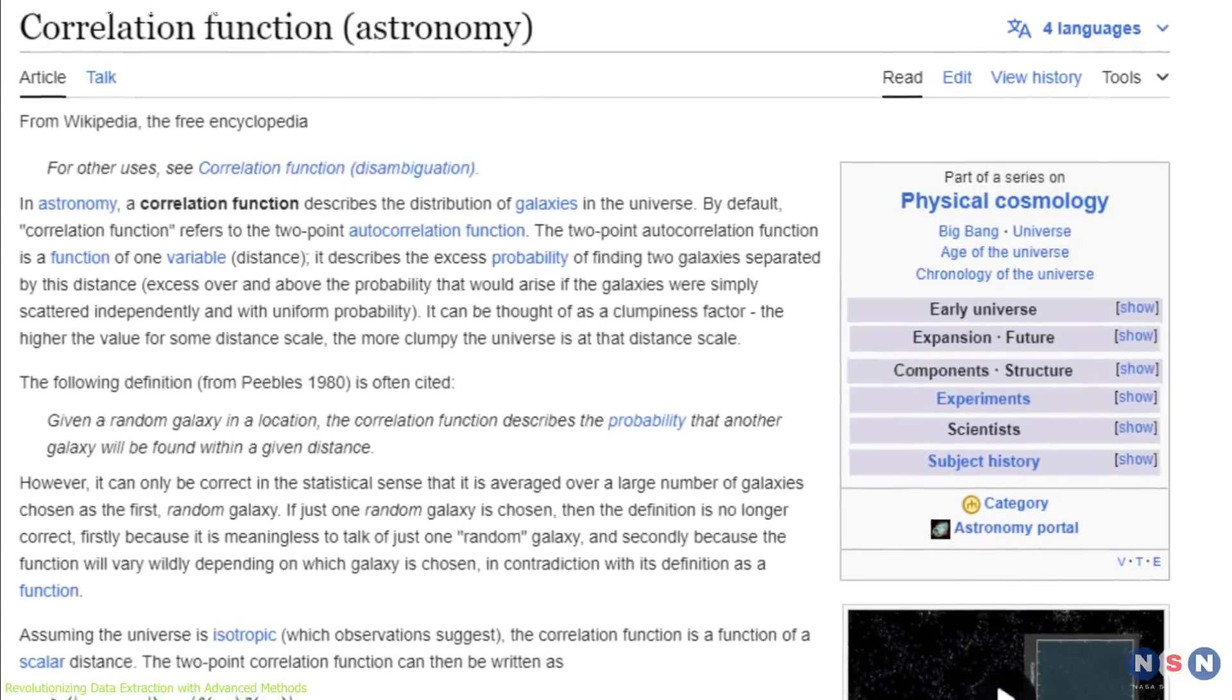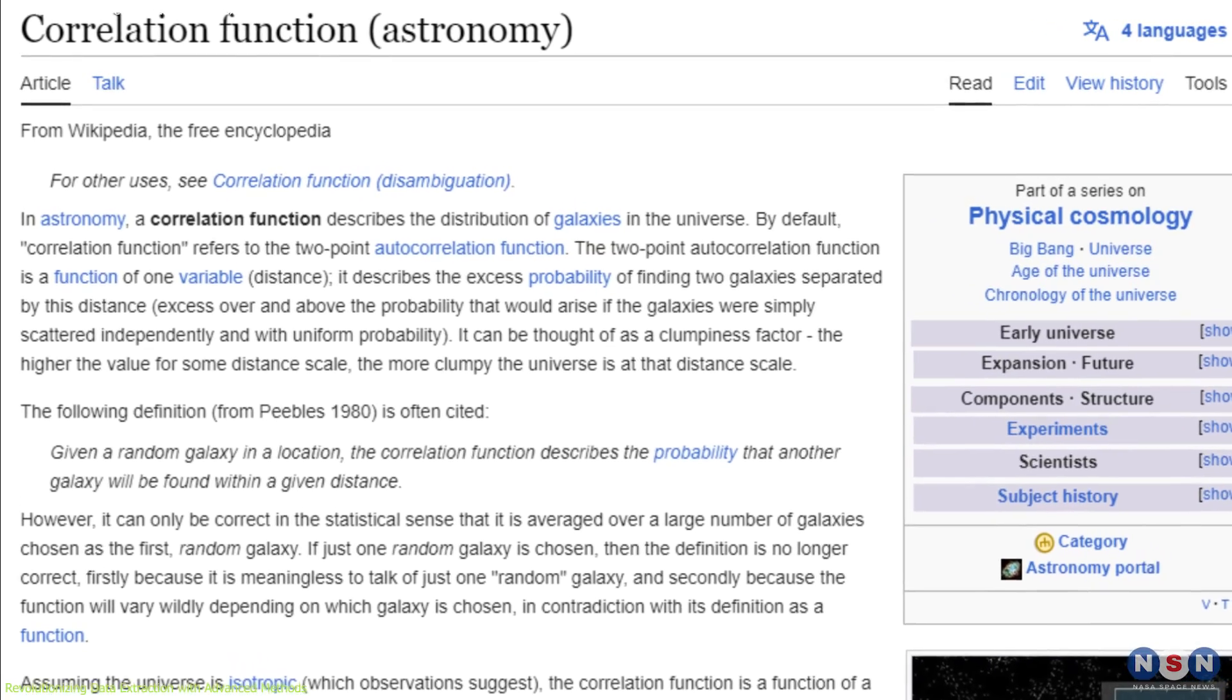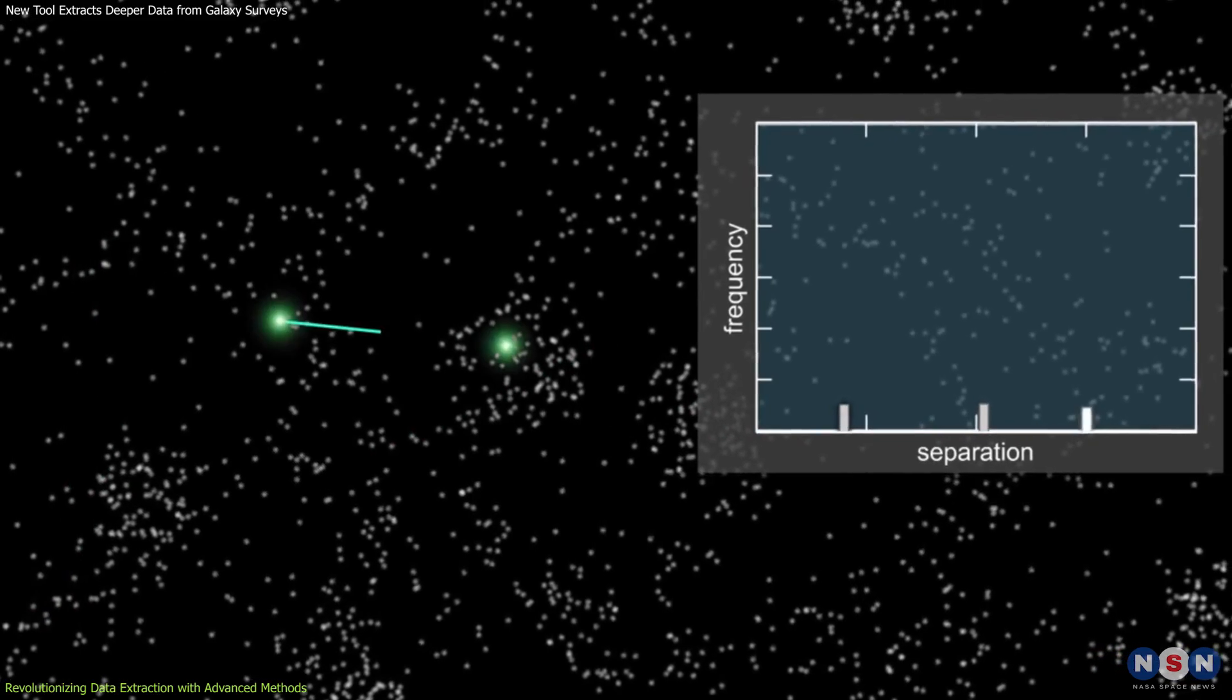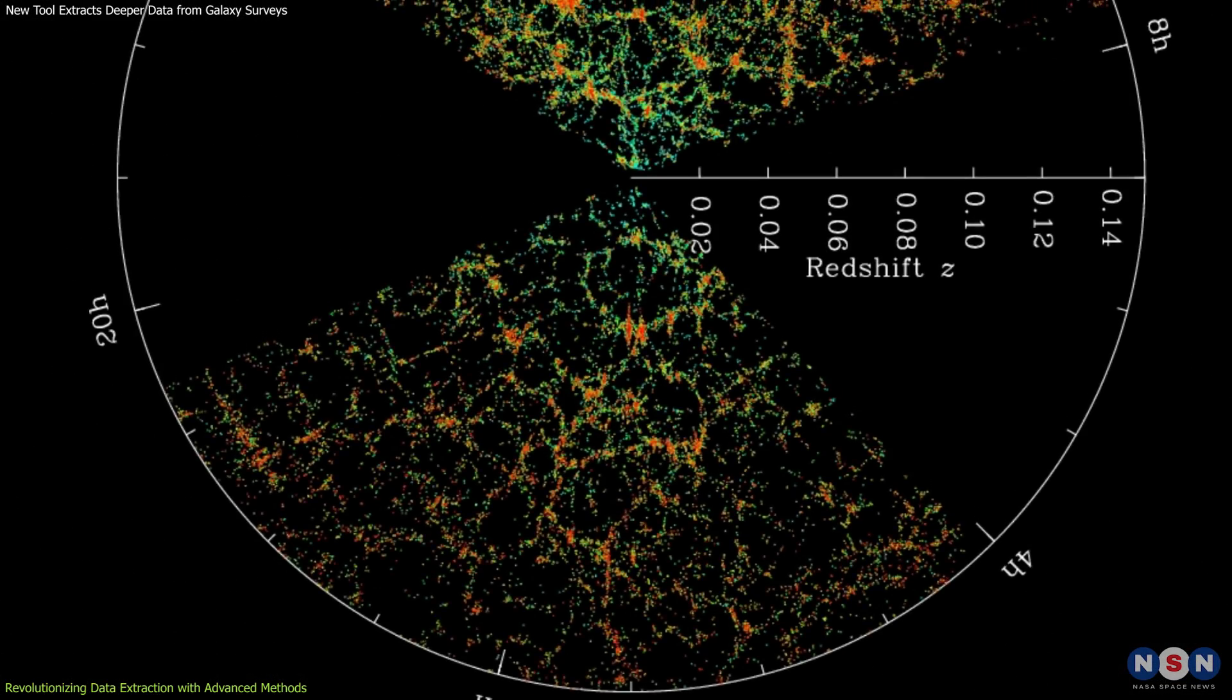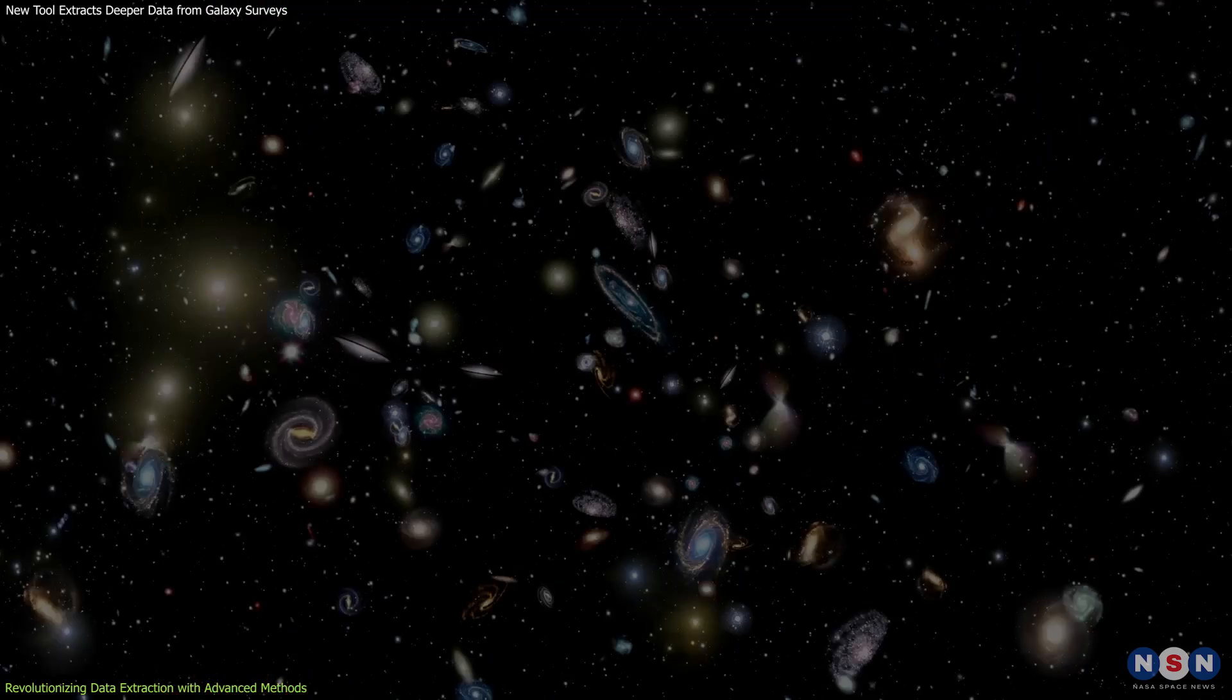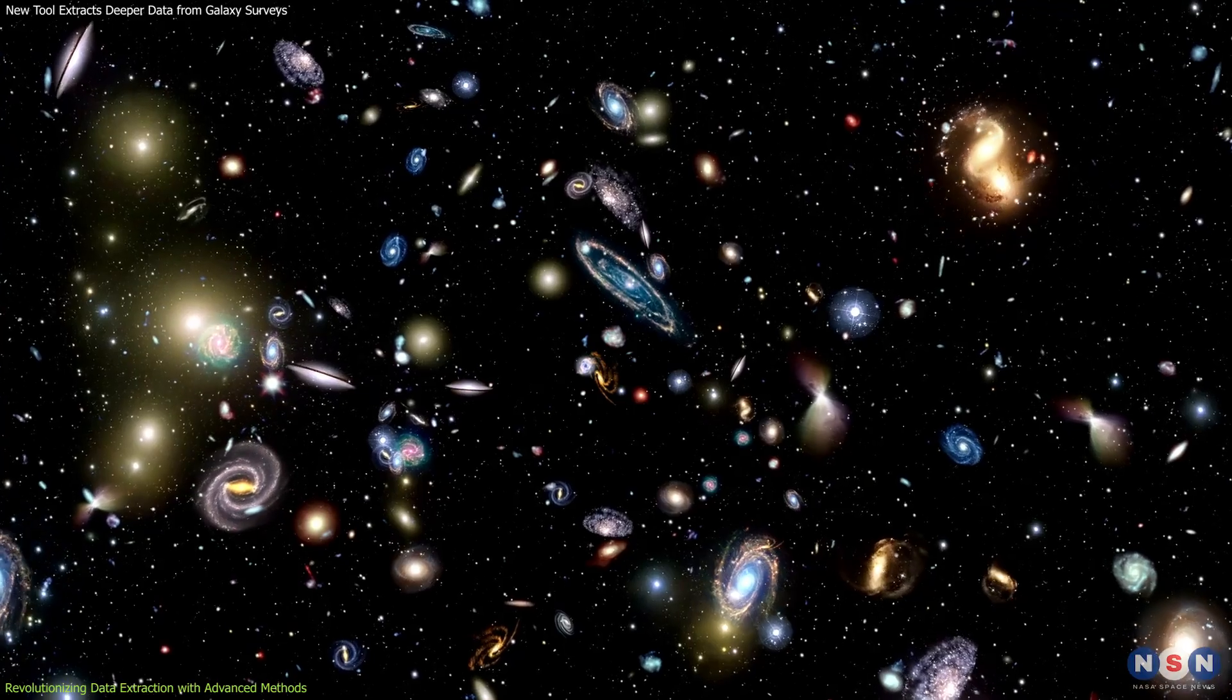The traditional focus has been on two-point correlation functions, which measure the statistical likelihood of finding pairs of galaxies at a certain distance from each other. This approach has been key in understanding the universe's broad structure, but has limited ability in detailing cosmic evolution.